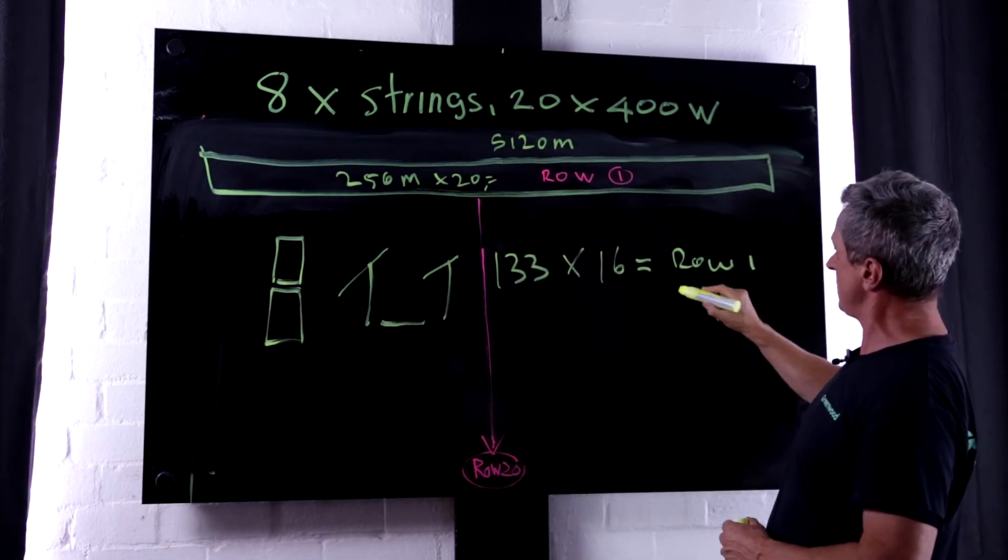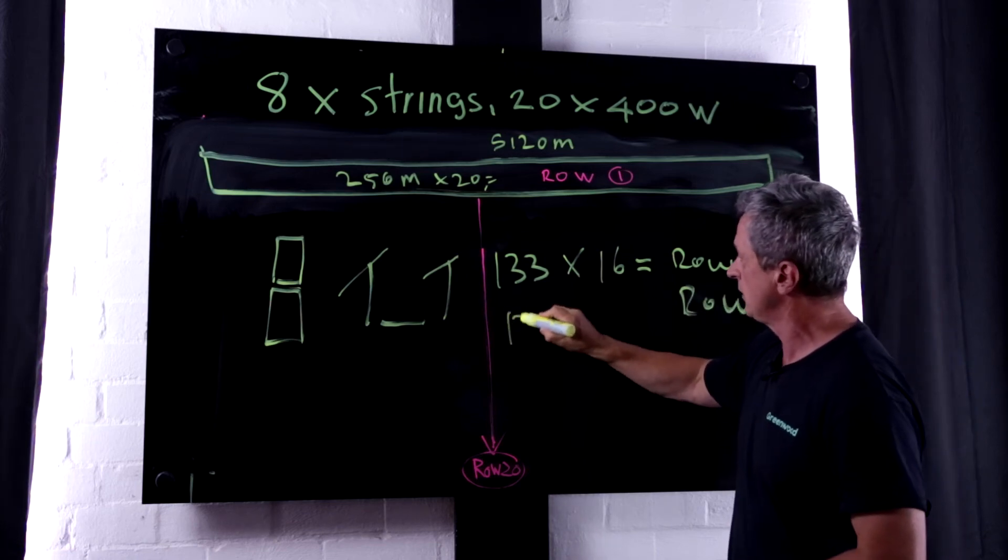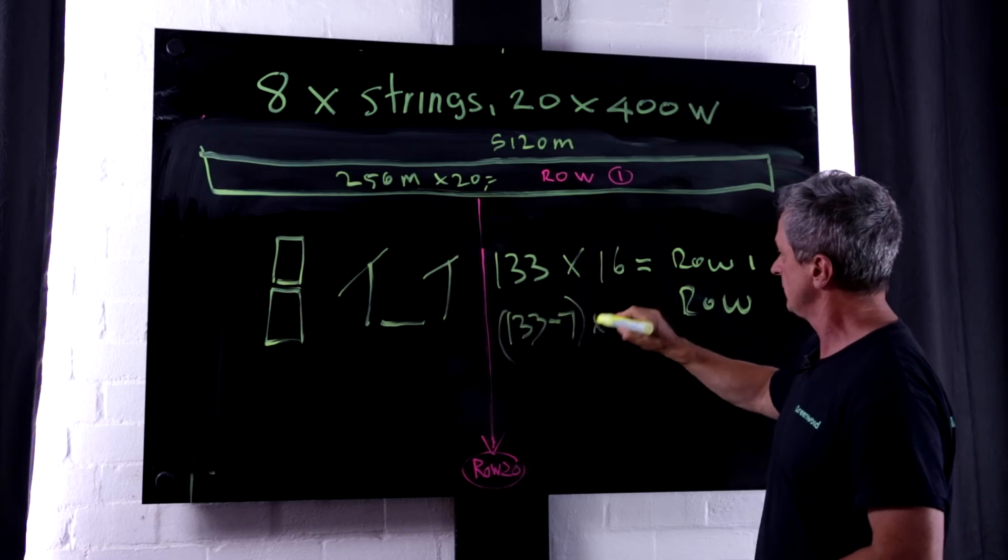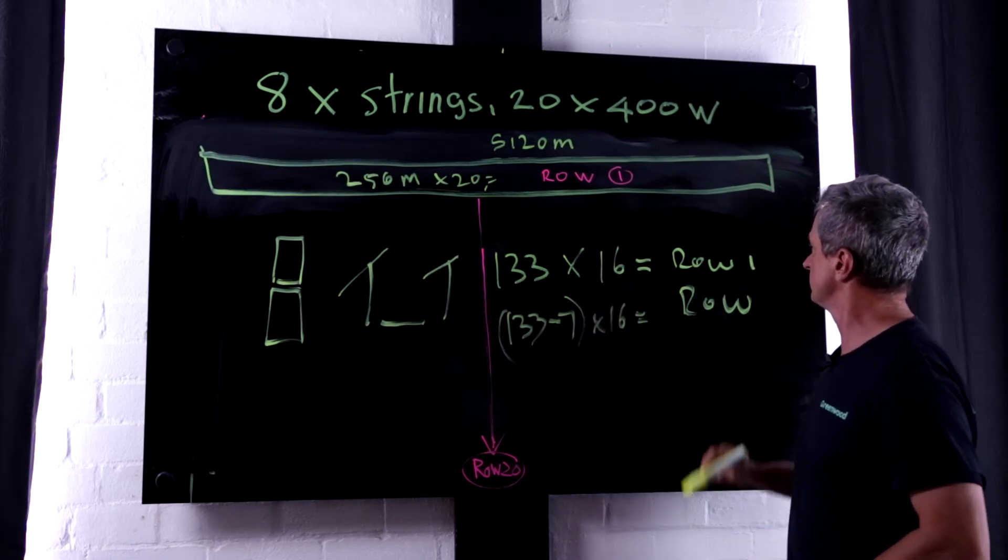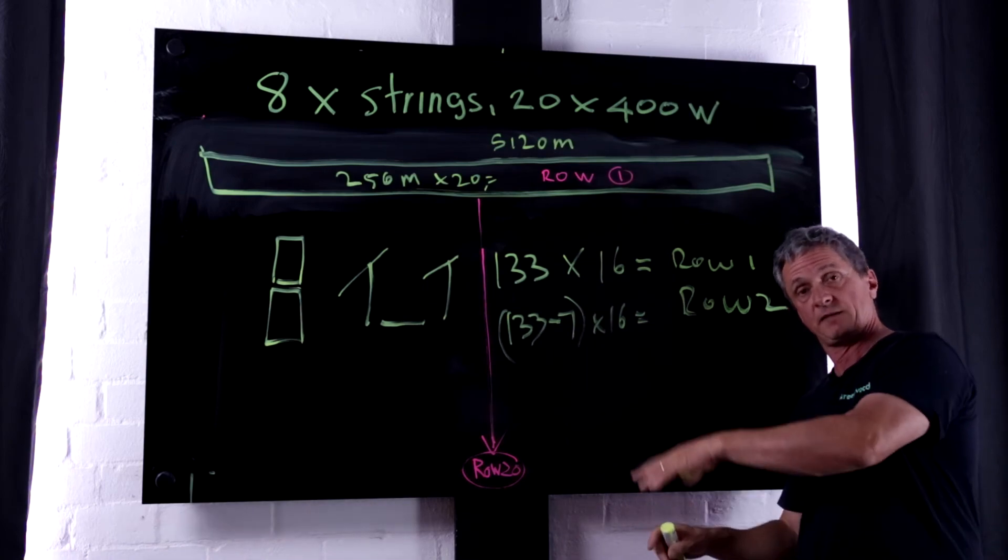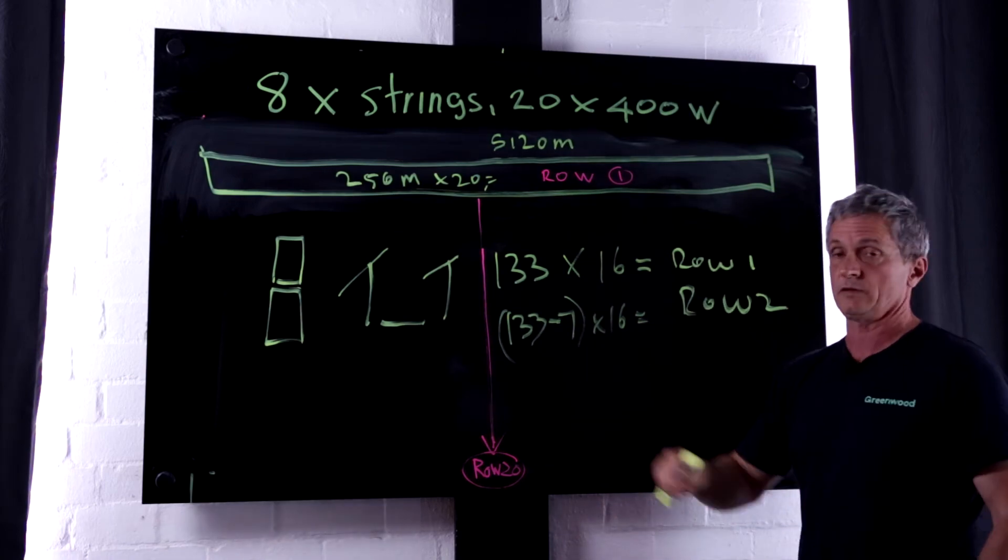So for row number two, the calculation would be 133 minus seven times 16. And that would be the amount of cable. And you keep on going all the way down to the last row.